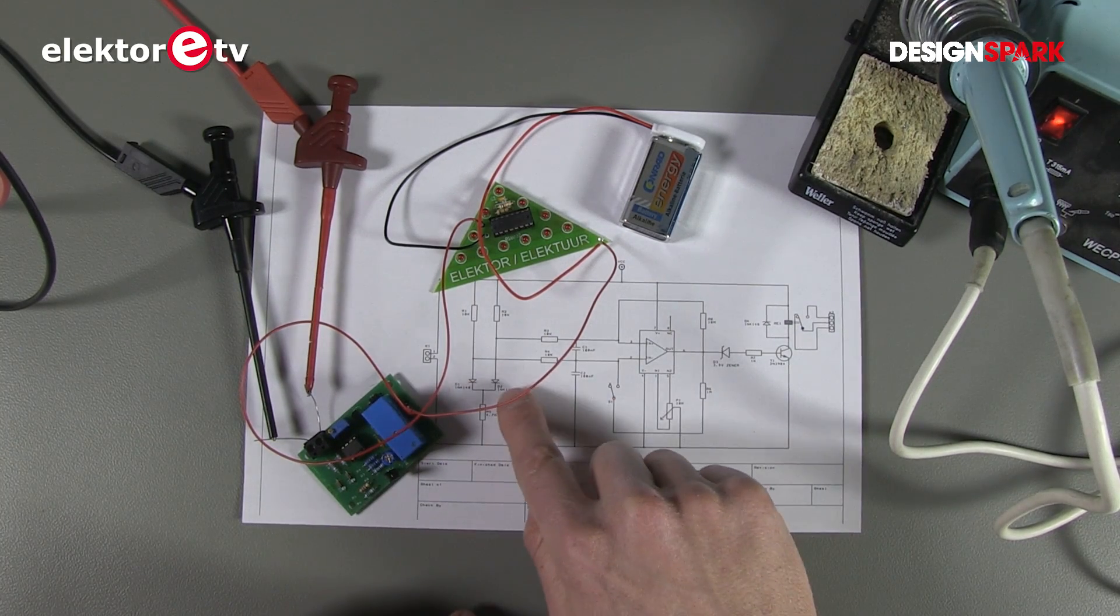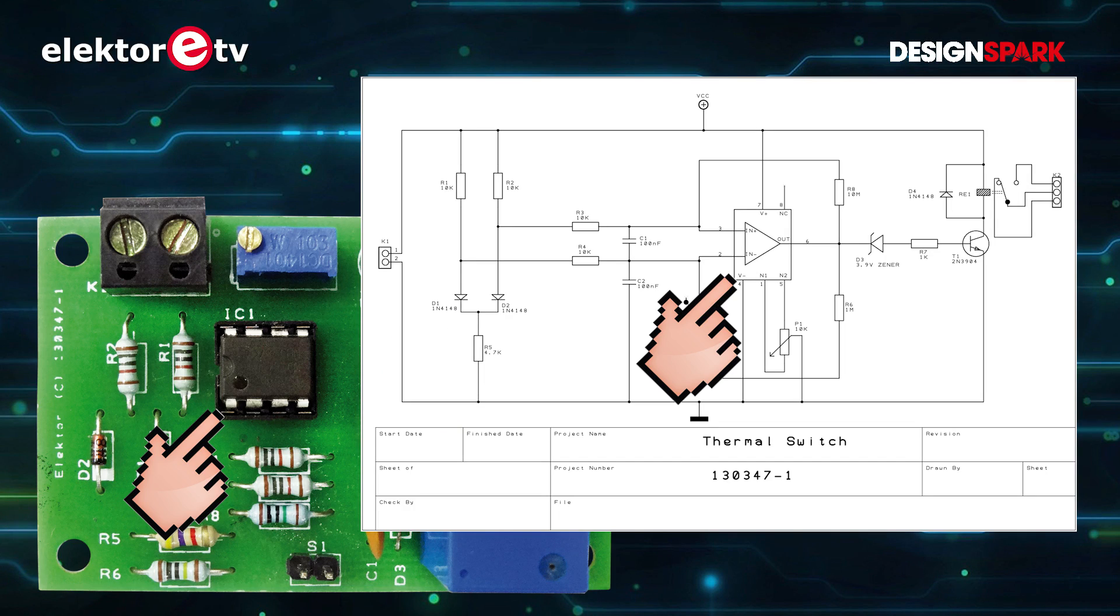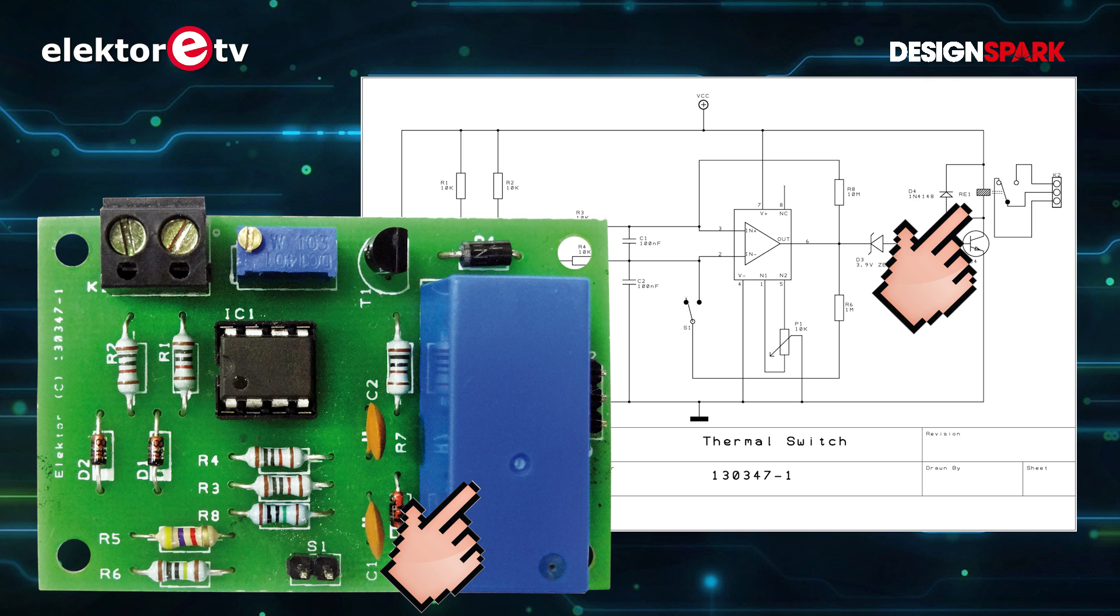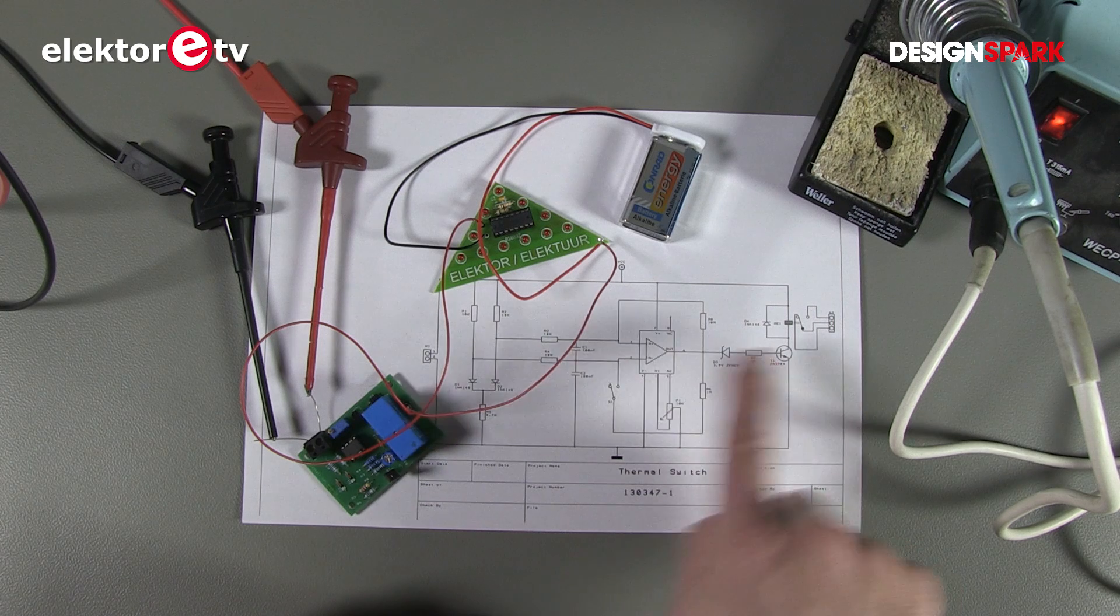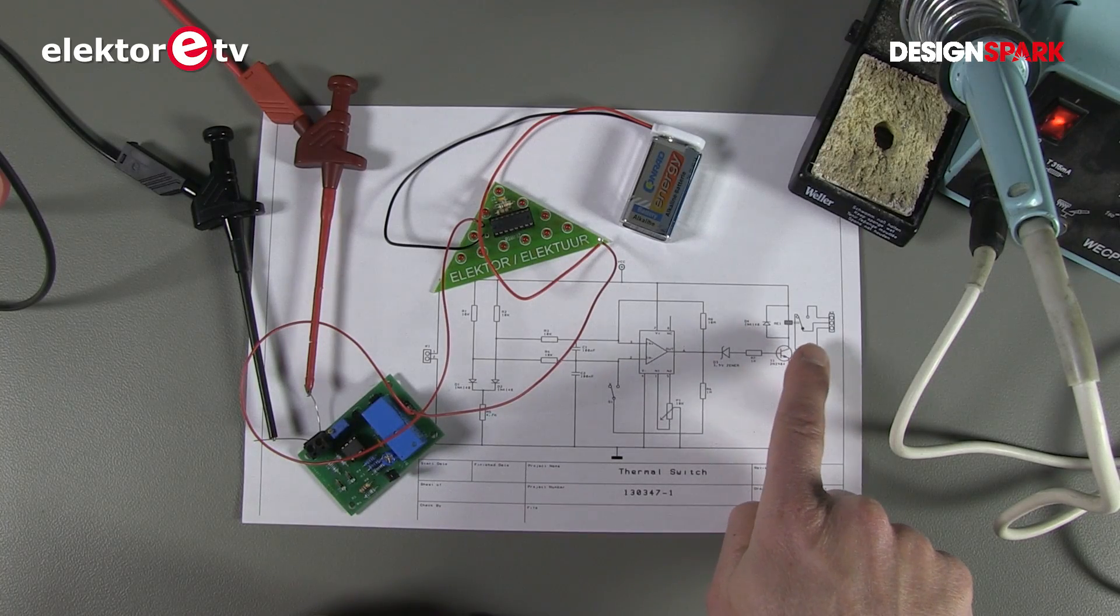The circuit is very simple. As I said, two diodes take the temperature. An op amp measures the difference between the two diodes, the voltage over the two diodes. When the one is higher than the other, it switches the relay. And that's it. When the other temperature becomes higher, then it switches the relay back off again.